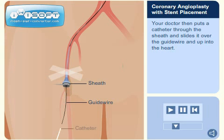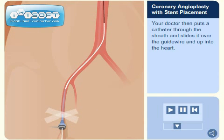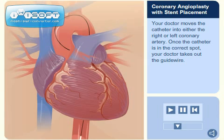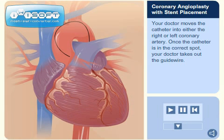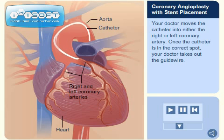Your doctor then puts a catheter through the sheath and slides it over the guide wire and up into the heart. Your doctor moves the catheter into either the right or left coronary artery. Once the catheter is in the correct spot, your doctor takes out the guide wire.